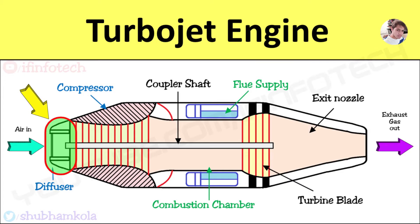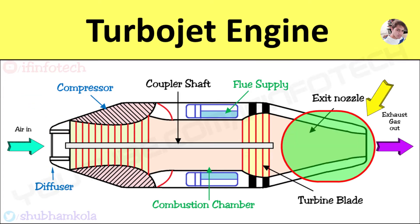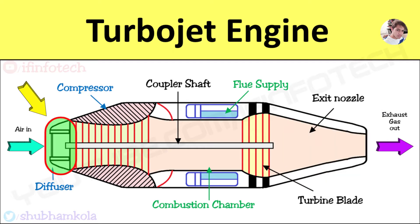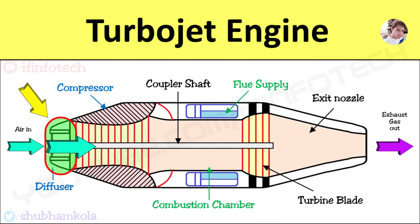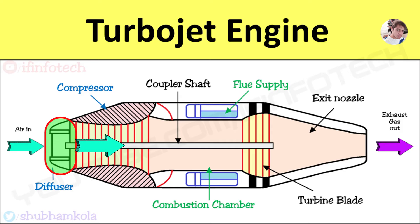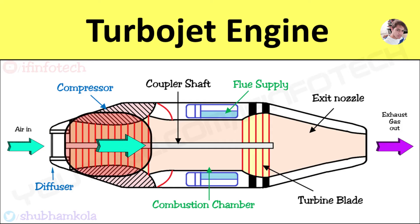The turbojet engine has a diffuser at its front side and a nozzle at the rear end. The diffuser is provided for the greatest pressure rise of incoming air, converting kinetic energy into pressure energy. The atmospheric air enters from the diffuser to the compressor, and the compressor increases pressure and temperature.